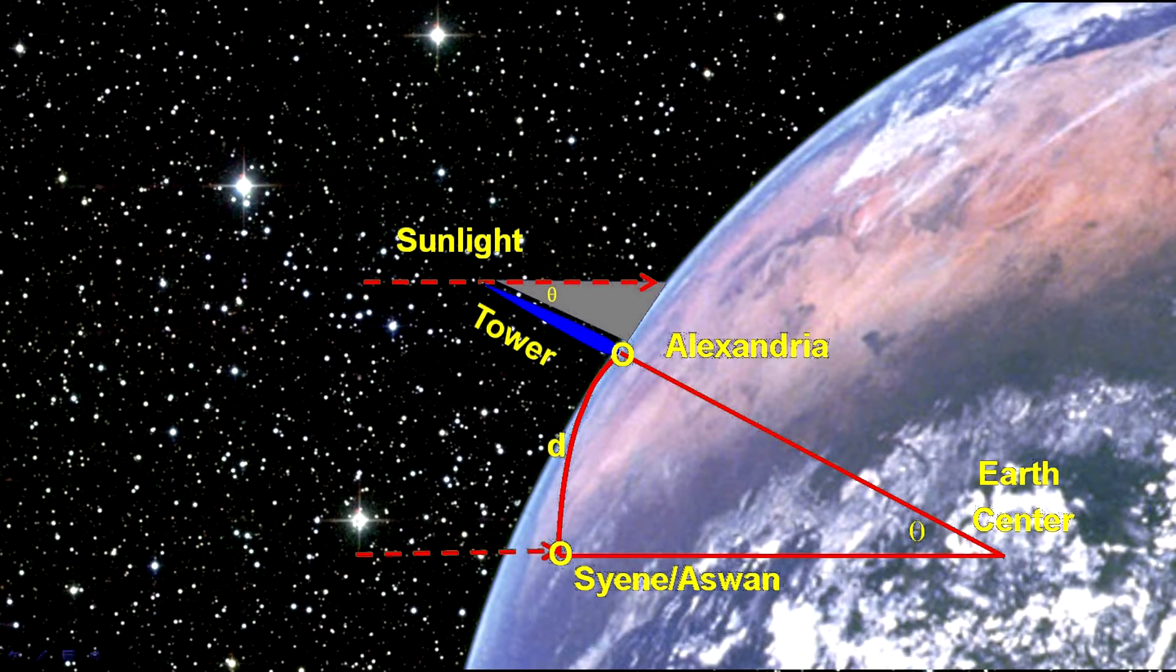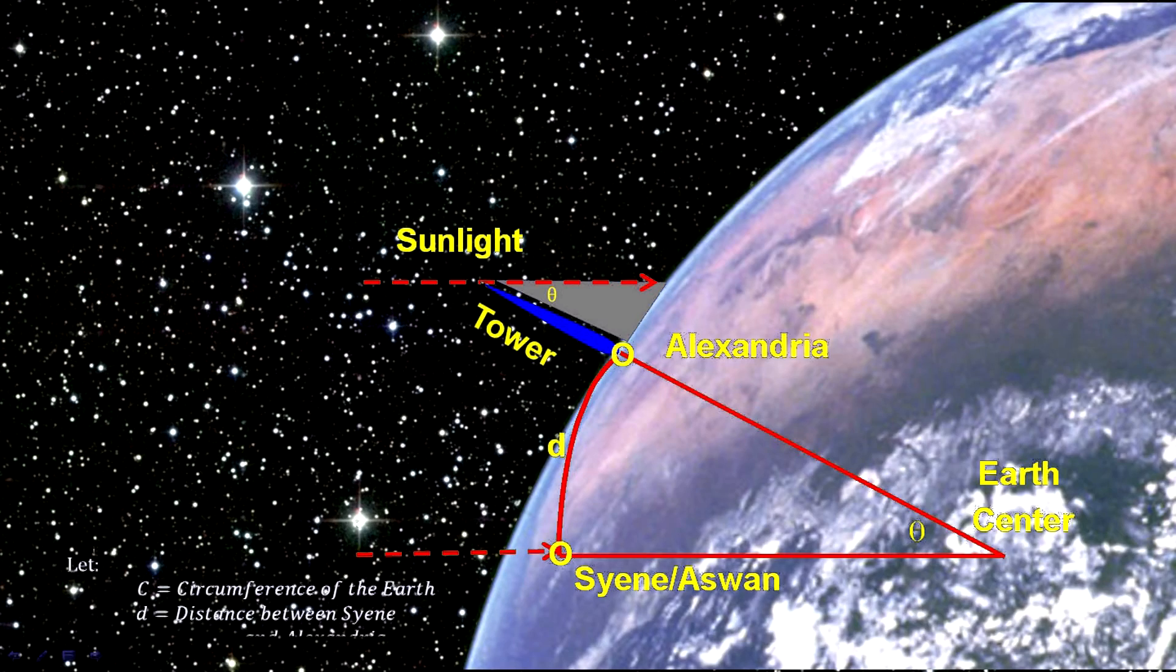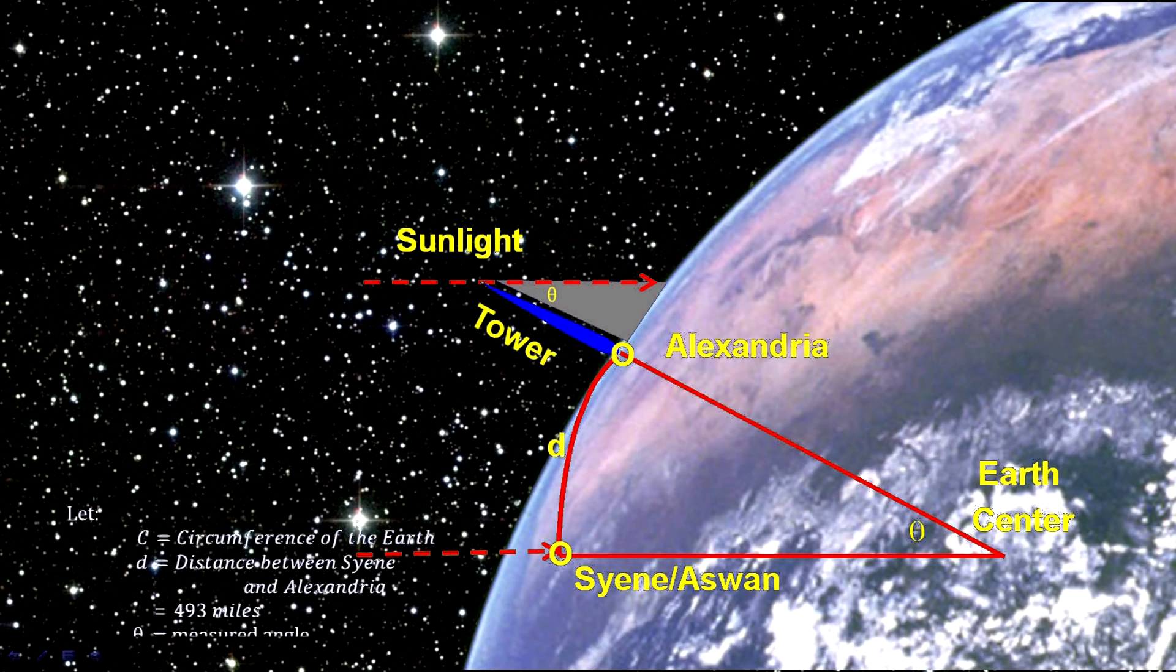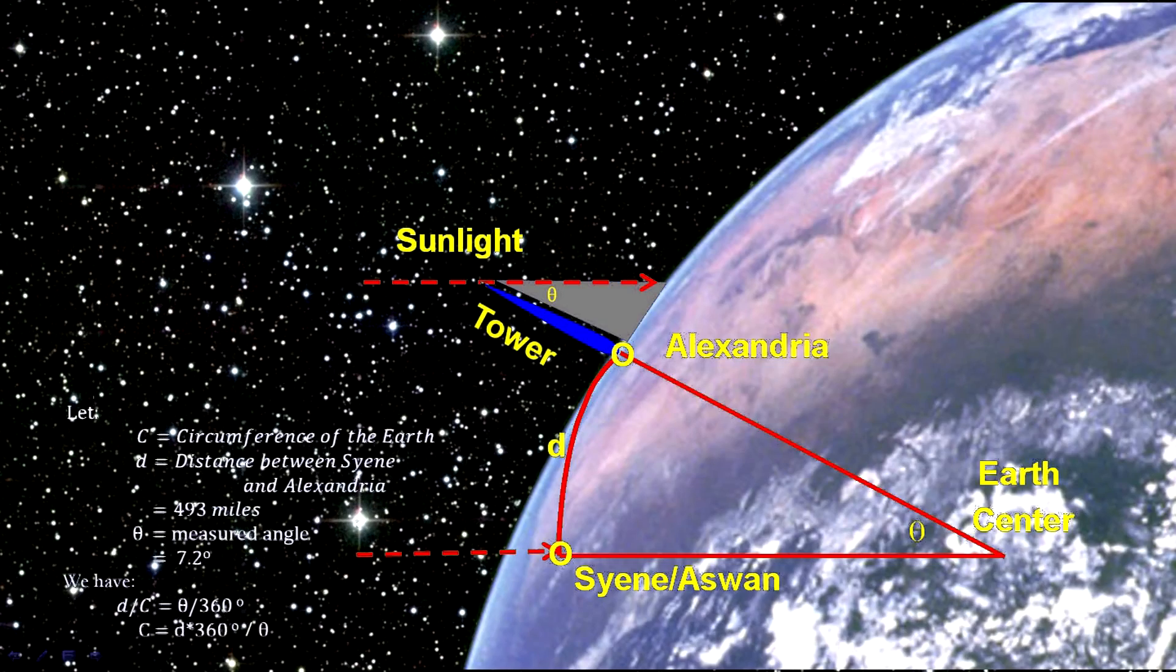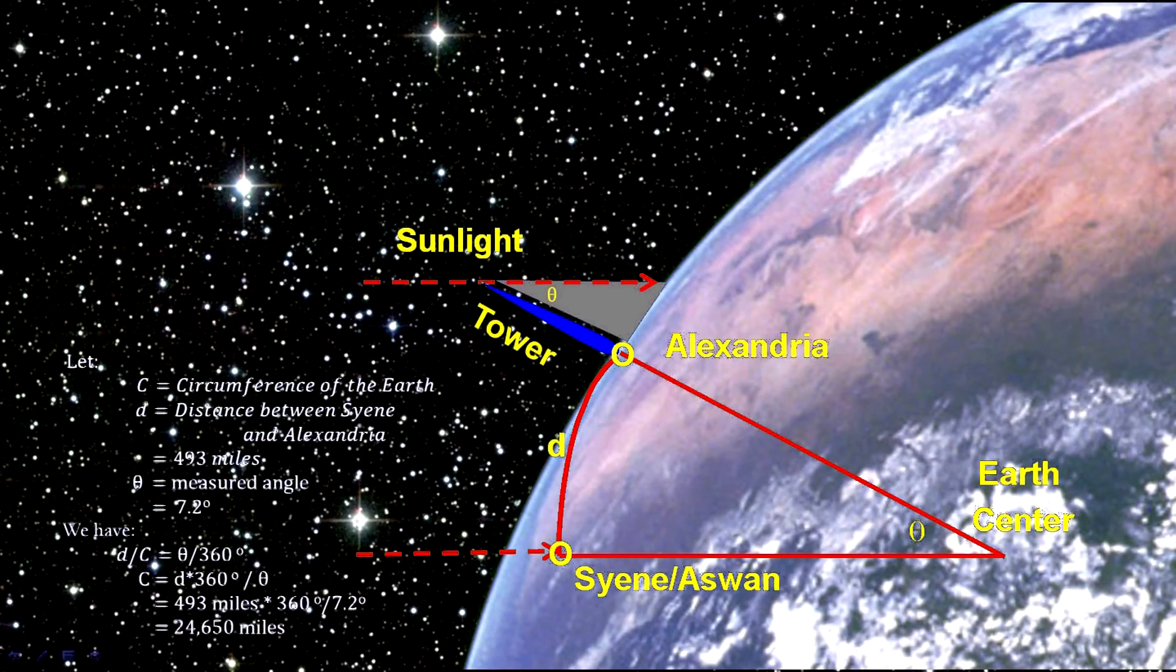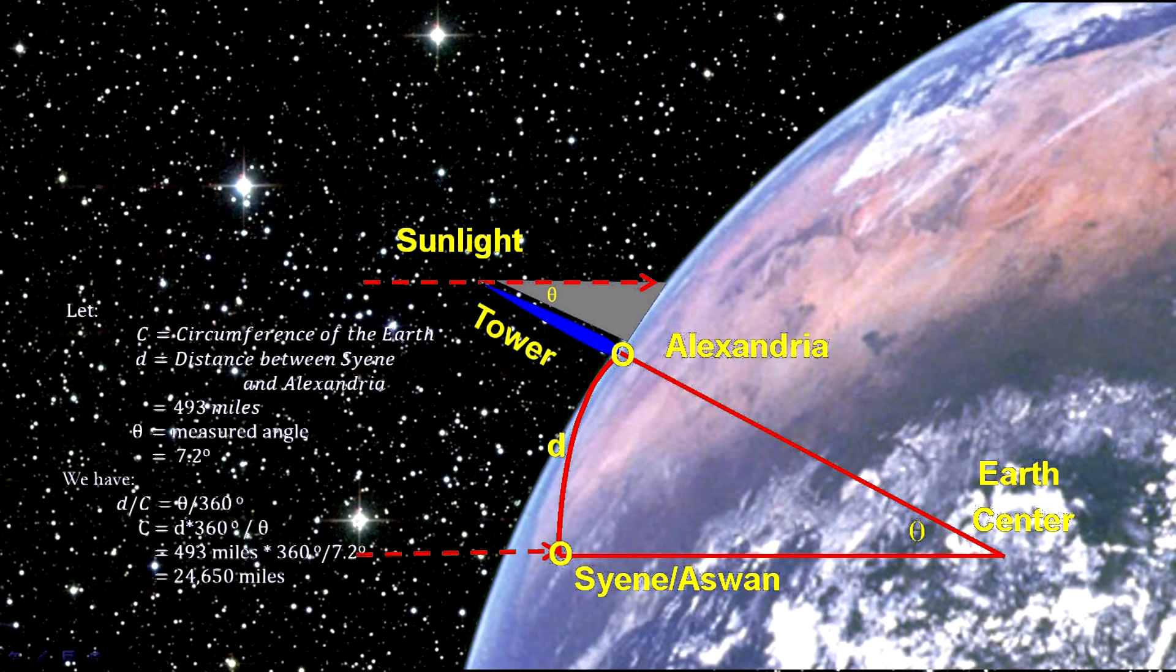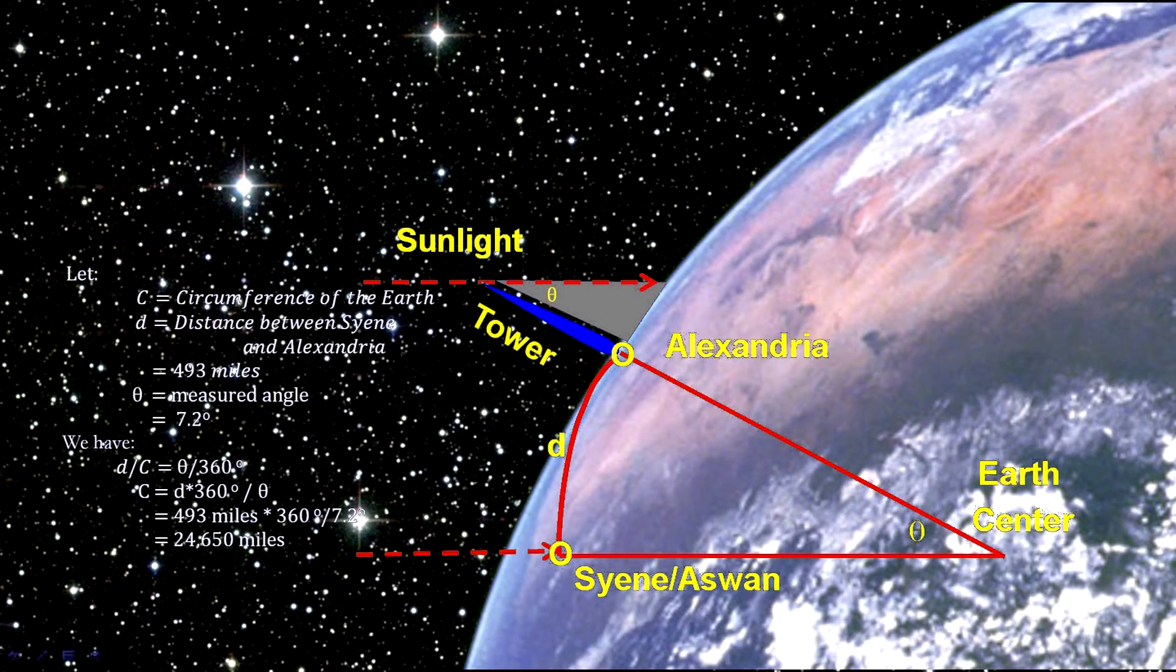So, given that the angle is 1/50th of a circle, the distance between the cities will be 1/50th of the circumference of the Earth. Thus, the circumference can be estimated by multiplying the distance between the two cities, 493, by 50, which equals 24,650 miles. The actual number at the equator is 24,901 miles, so he was only 1% off.